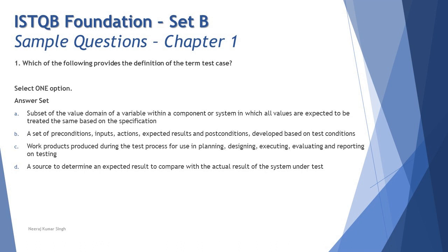Option C says: 'work products produced during the test process for use in planning, designing, executing, evaluating, and reporting on testing.' While test cases can be a work product used in execution, they are not used for planning, evaluating, or reporting. They are created in the designing phase and used primarily during the execution phase.